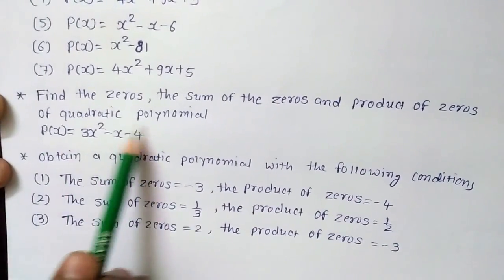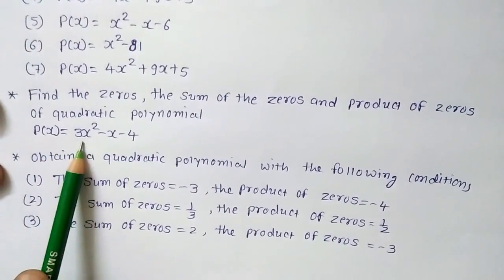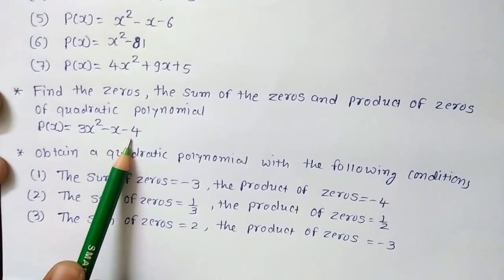The quadratic polynomial is p(x) is equal to 3x² minus x minus 4.